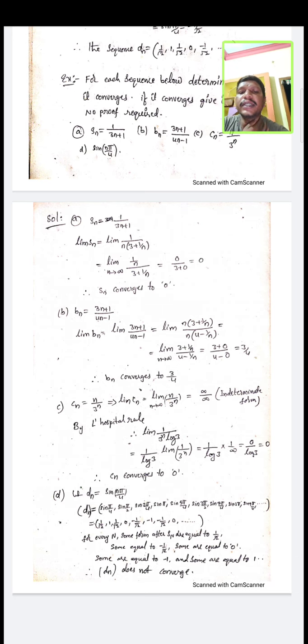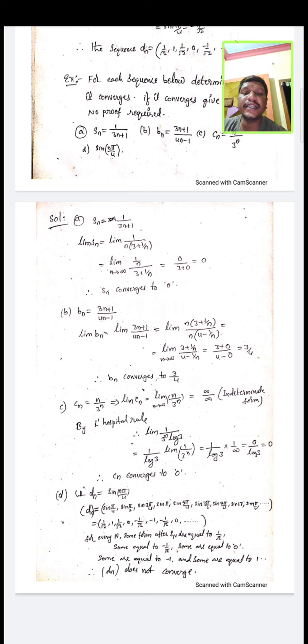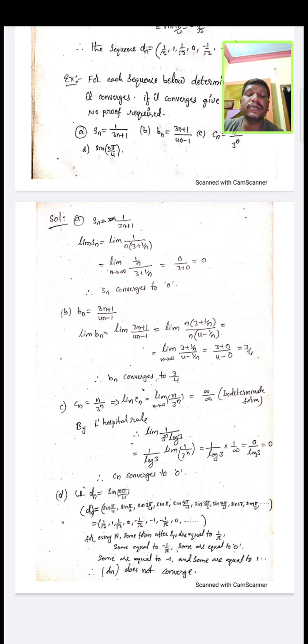For the second example, B_n = (3n+1)/(4n-1): taking n common from numerator and denominator, the n's cancel, giving limit of (3 + 1/n)/(4 - 1/n) = (3+0)/(4-0) = 3/4. The sequence has a finite limit, so B_n converges to 3/4.